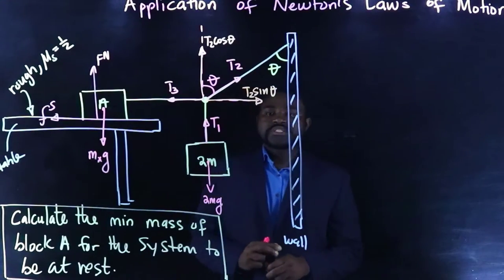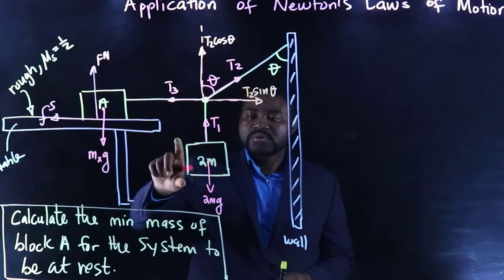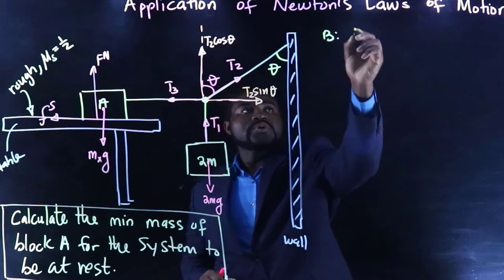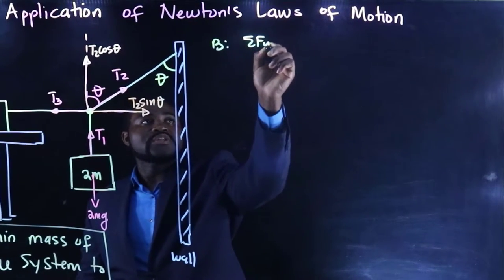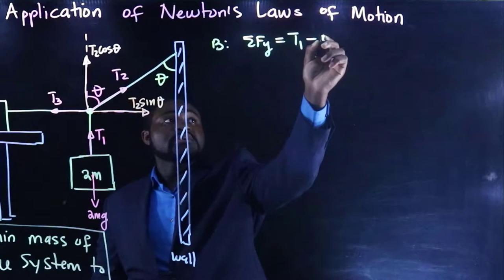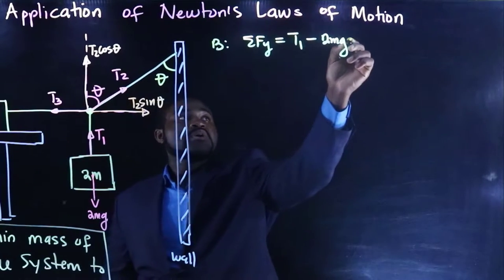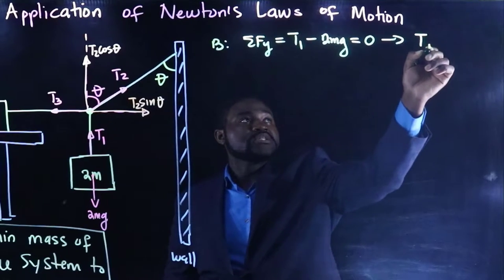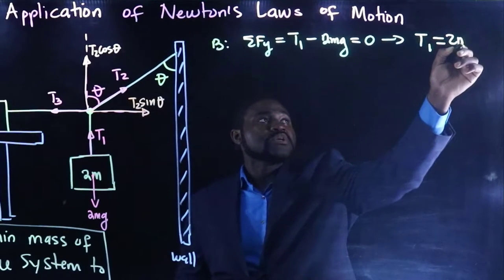So let's start with block B. For B, we know that the sum of forces in the y direction, we have T1 minus 2MG equal to 0. This means that T1 is equal to 2MG.